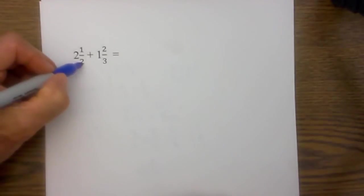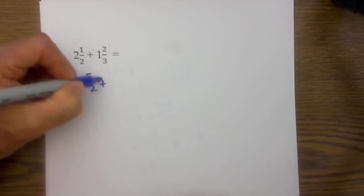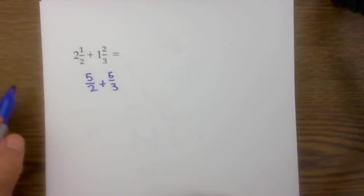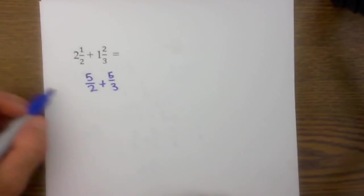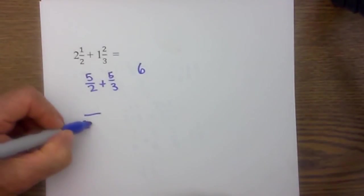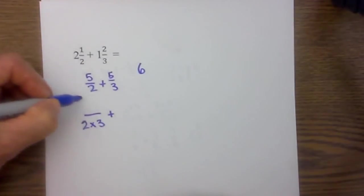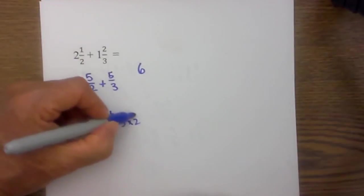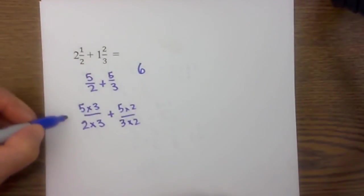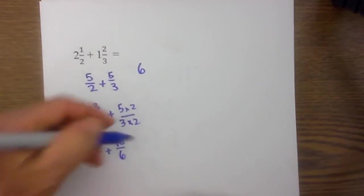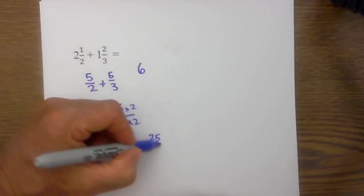Now let's convert to an improper fraction. Two times two is four, plus one is five-halves. Plus three times one is one plus two is five-thirds. I cannot add them because I do not have a common denominator. The lowest common denominator is six. Two goes into six three times, so it will be five times three over six, plus three goes into six two times so five times two over six. That becomes fifteen over six plus ten over six, which equals twenty-five over six.